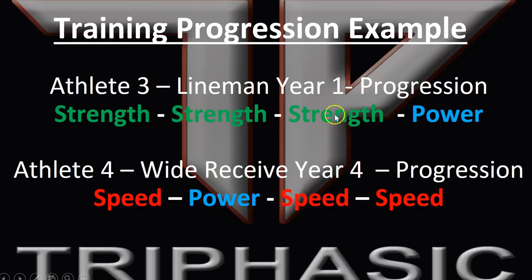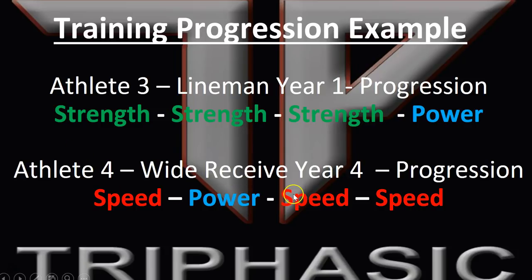Here's another training progression example. Athlete 3 — if you plugged in his formula alignment in year one of your program — needed strength, strength, strength, and then progressed to power. Athlete 4 is a four-year athlete, maybe a wide receiver, and he needed speed, power, speed, speed. In a typical model, you might not get to speed work in the weight room until the very end. That would have limited his progression from the start, because the true weakness he had was clearly speed. These formulas can help you identify that.